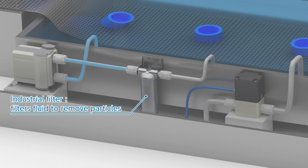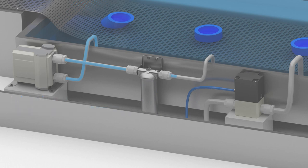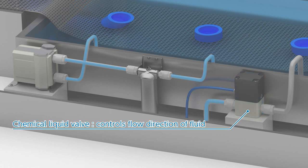An industrial filter filters the fluid to remove particles and impurities. A chemical liquid valve controls the flow of chemical fluids.